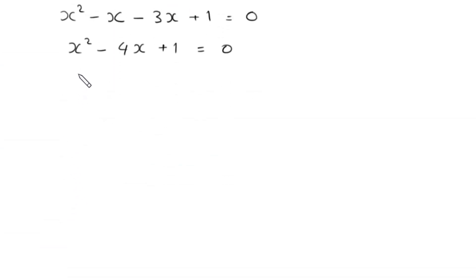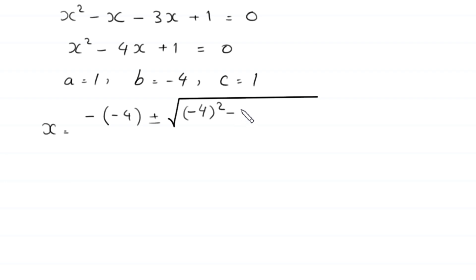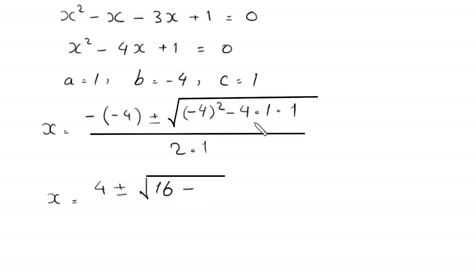Now this is a quadratic equation and is not factorable, so we solve it by the quadratic formula. In this equation a is equal to 1, b is equal to negative 4, and c is equal to 1. According to the quadratic formula, x is equal to negative b plus or minus square root of b squared minus 4ac, divided by 2a. Substituting: negative of negative 4 plus or minus square root of negative 4 squared minus 4 times 1 times 1, divided by 2 times 1.